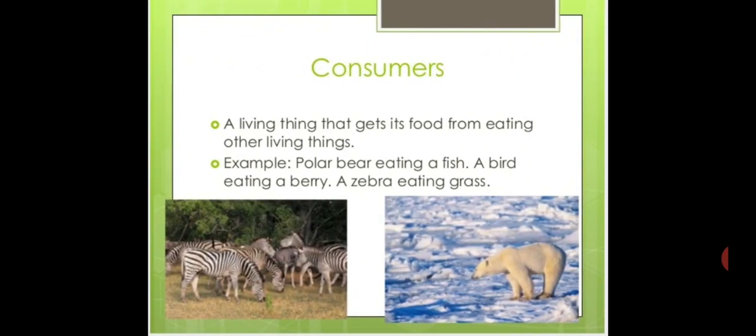Since we depend on producers, we fall under consumers — the second part of the ecosystem. A consumer is a living thing that gets its food by eating other living things. Examples include a bear eating a fish, a bird eating a berry, and a zebra eating grass. Consumers are further divided into primary consumers, secondary consumers, and tertiary consumers, also called apex consumers.